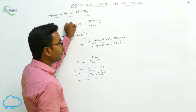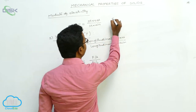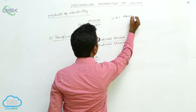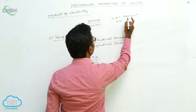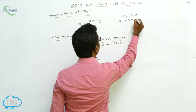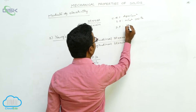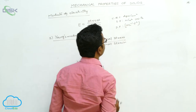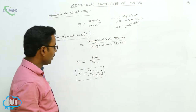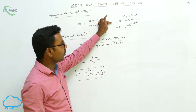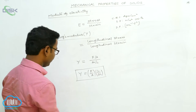For every modulus of elasticity, the units and dimensions are the same as those of stress. The CGS units are dyne per centimeter square, SI units are newton per meter square or Pascal, and the dimensional formula is ML⁻¹T⁻². These units and dimensional formula apply to Young's Modulus and all other moduli of elasticity.